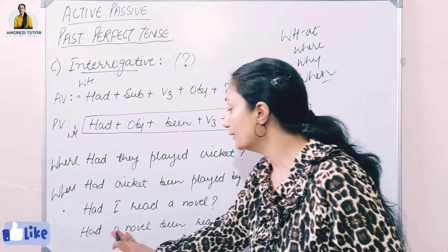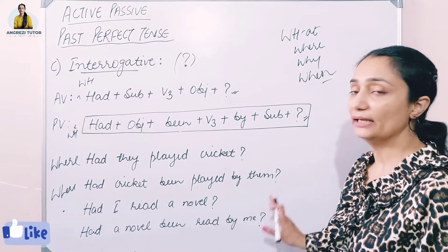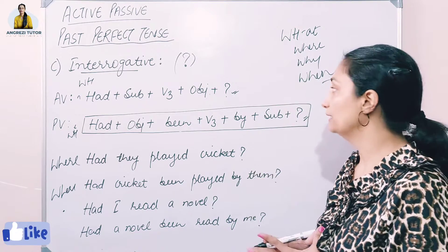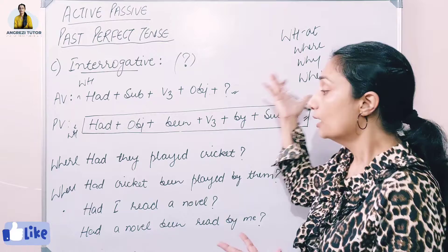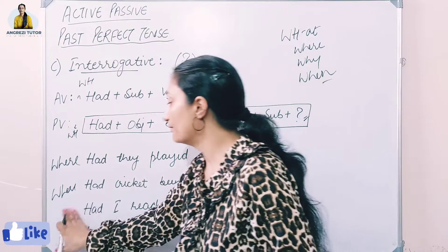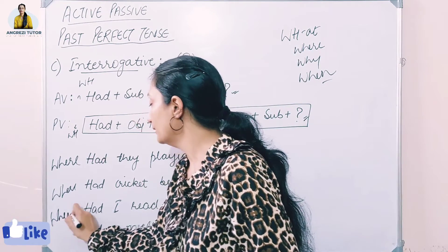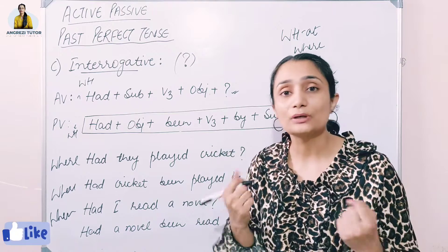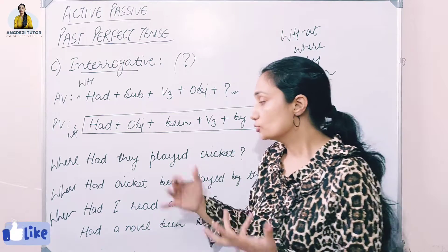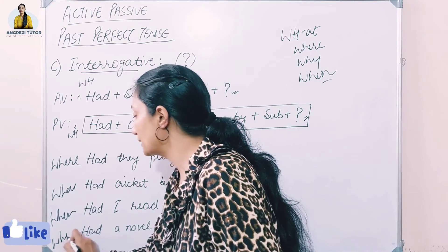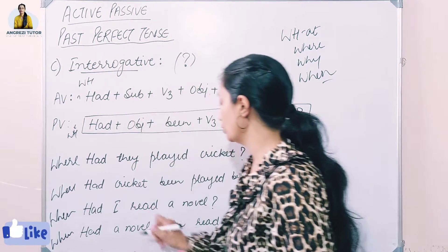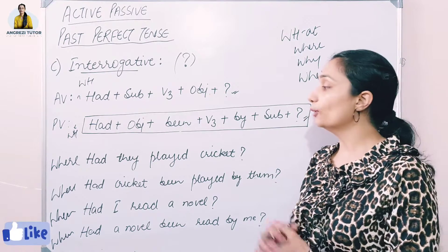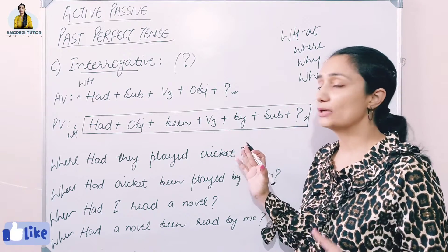Another WH-family example: 'When had I read a novel?' In passive, this becomes: 'When had a novel been read by me?' The WH word stays at the front, followed by the passive structure. I hope it is clear to you guys.